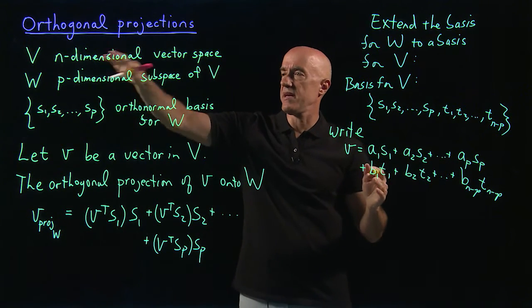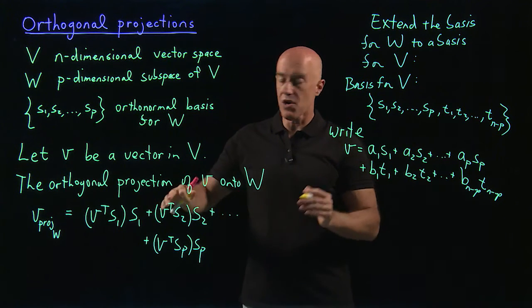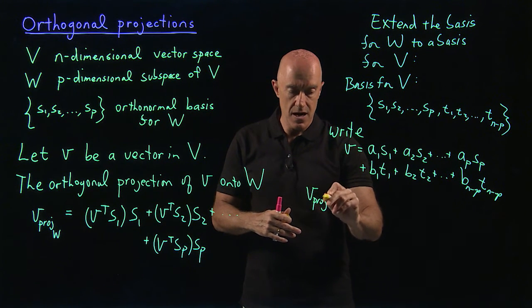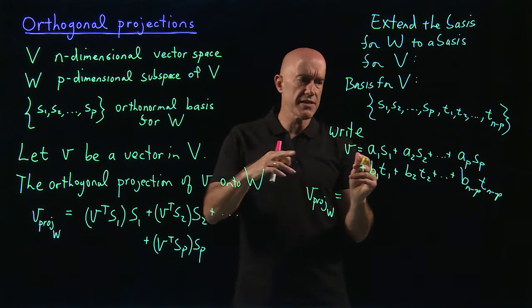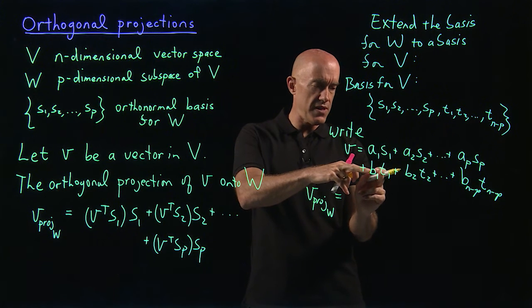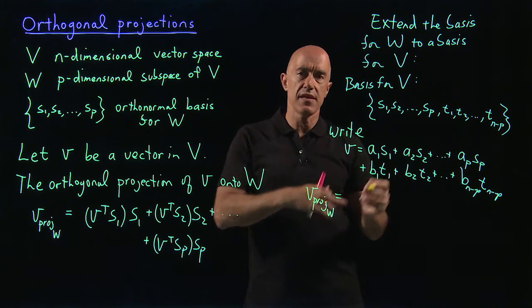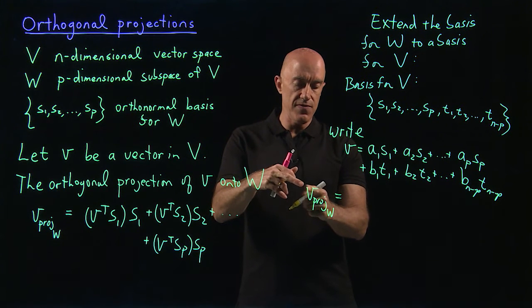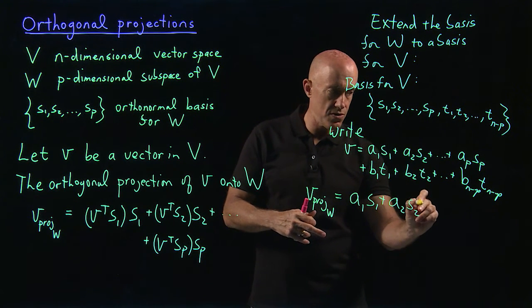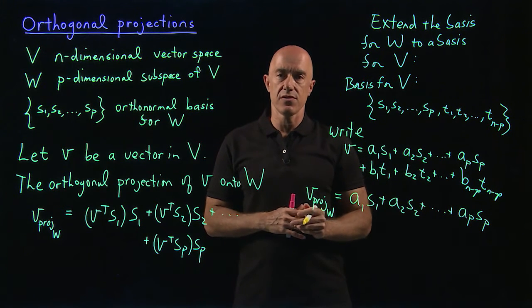Any vector in the big vector space V can be written as a linear combination of these basis vectors. So in this notation, v projected onto W is just the piece of this vector that lies in W. All terms proportional to the t vectors are outside of W; only the s vectors lie in W. So v projected onto W is just a1·s1 plus a2·s2 plus ap·sp — we throw away the t vectors.